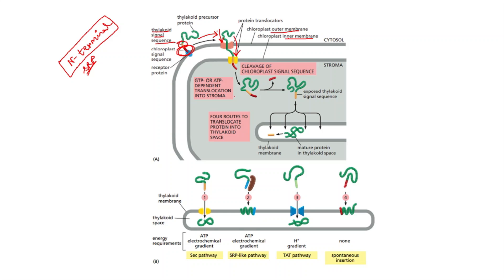After reaching the second protein translocator, translocation within the stroma occurs. Translocation into the stroma is an ATP or GTP dependent process — it requires energy in the form of ATP or GTP. After ATP hydrolysis, the protein is translocated within the stroma. Once inside the stroma, the N-terminal signal sequence is cleaved by a signal peptidase, and it goes off.